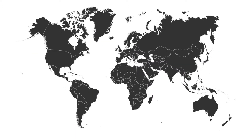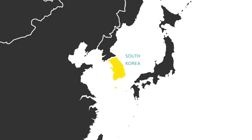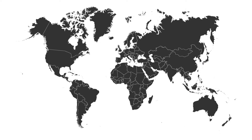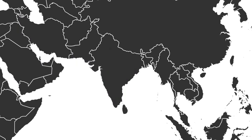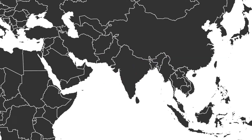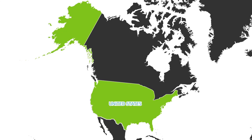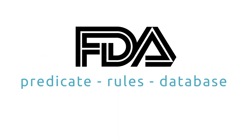When it comes to medical device classification, different markets employ different systems. Some markets use a predicate-based system, wherein devices inherit the risk class of similar devices already for sale. Markets such as Europe and Canada follow a distinct set of logical rules to determine device classification. Still other markets have extensive categorical lists of predefined device types. The U.S. FDA classification system uses elements of all these methods, but is quite distinct.